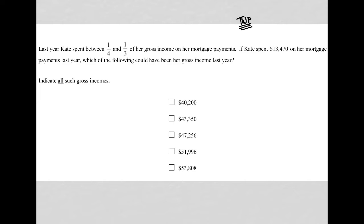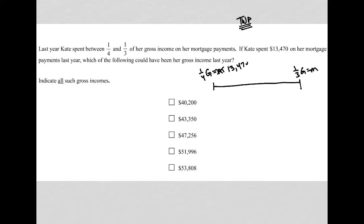What we've read in the first sentence can be translated. 'Between one-fourth and one-third' tells me that her gross income is on a range of possibilities. On one end, one-fourth G equals the mortgage payment; on the other end, one-third G equals the mortgage payment. The next sentence says Kate spent $13,470 on mortgage payments, so that means M is actually $13,470.